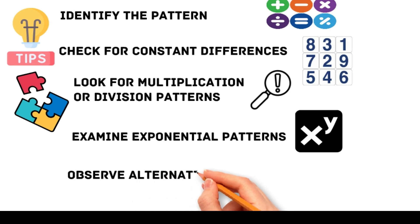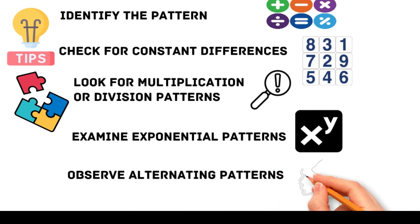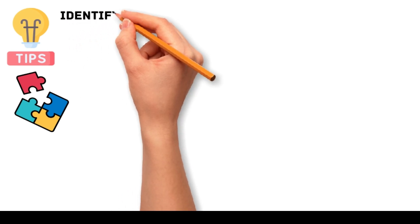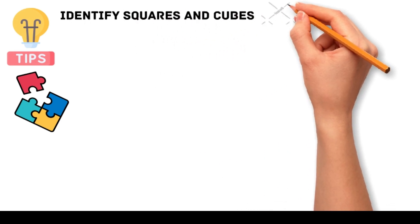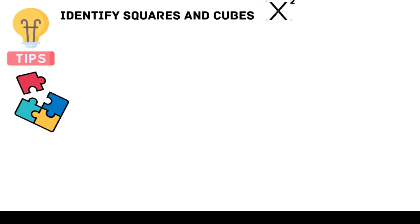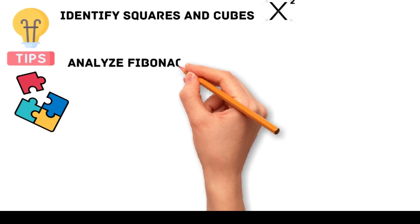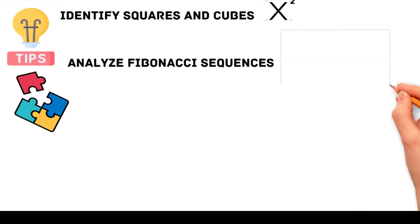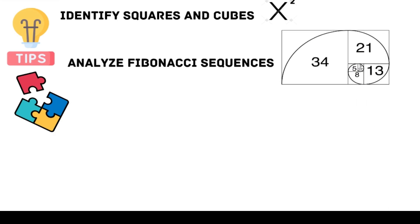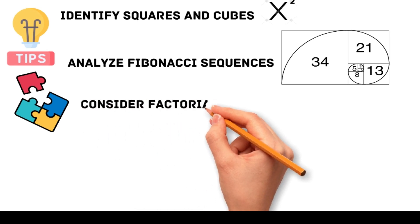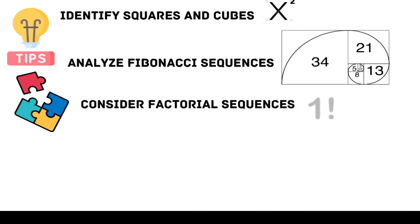Observe alternating patterns: some series alternate between different patterns — pay attention to every second or third number to spot these. Identify squares and cubes: recognize if the numbers are squares or cubes of integers, which is a common pattern in many series. Analyze Fibonacci sequences: look for sequences where each number is the sum of the two preceding numbers. Consider factorial sequences: factorials n! grow rapidly and can form a series.